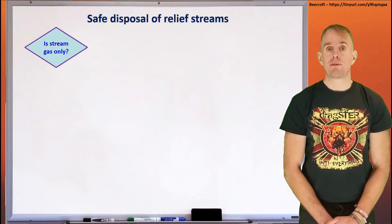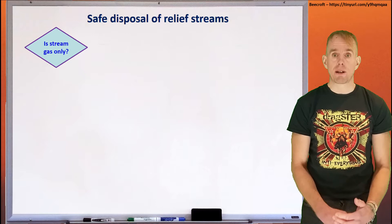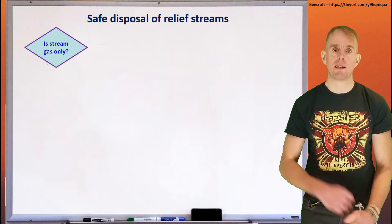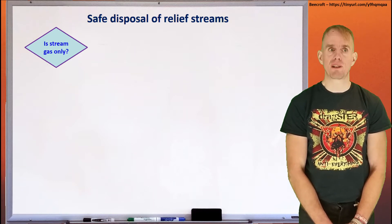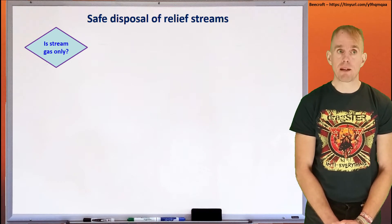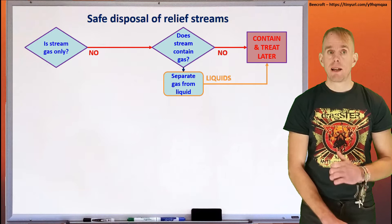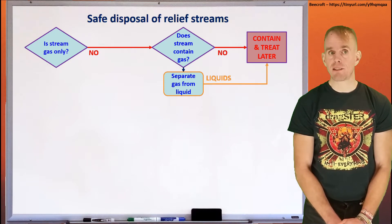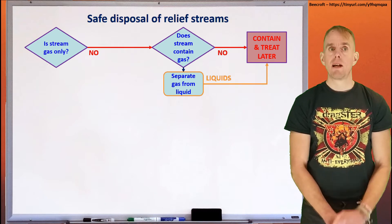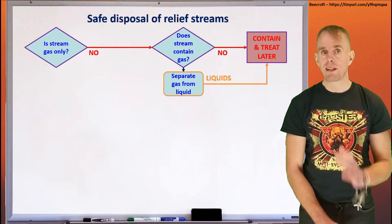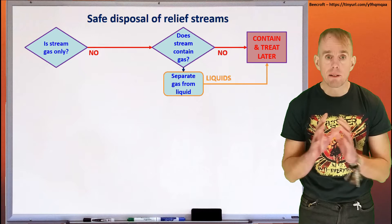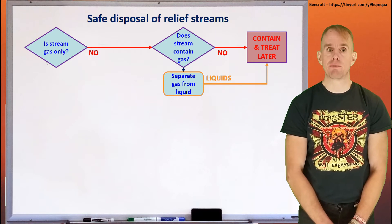In the case of a relief event occurring, you need to do something with whatever is released by that relief event. There's a flowchart here that is very useful to guide you through this process. The first question you have to ask is: is the stream gas only? If not, and the stream contains liquid, then ask yourself does the stream contain gas? If it does, you've got to separate that gas out of the liquid. But if it doesn't contain gas, then for liquid, contain them and treat them later — there'll be some sort of containment where that is a problem for after the relief event is finished.